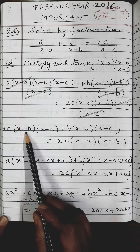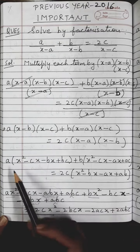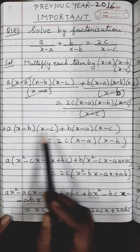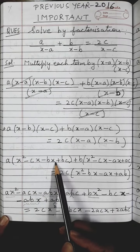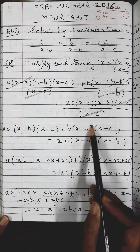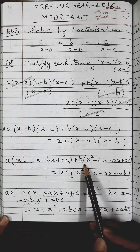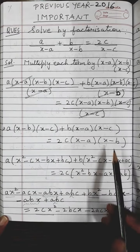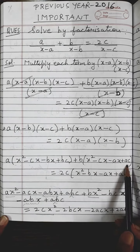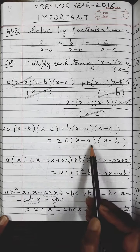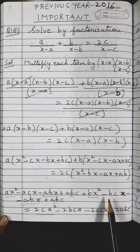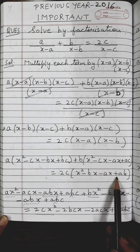Now I will multiply these brackets out. For the first term, a remains outside: x times x is x squared, x times minus c is minus cx, minus b times x is minus bx, minus b times minus c is plus bc. For the second term, b remains outside: x squared, minus cx, minus ax, plus ac. On the right side, 2c times: x squared, minus bx, minus ax, plus ab.